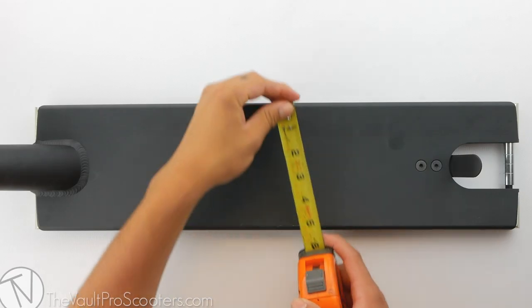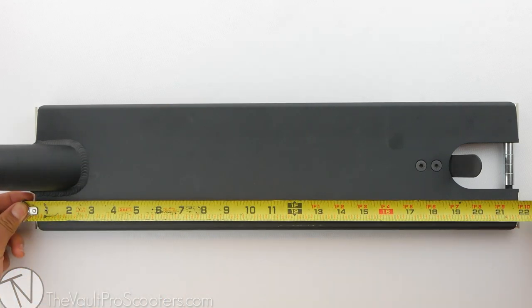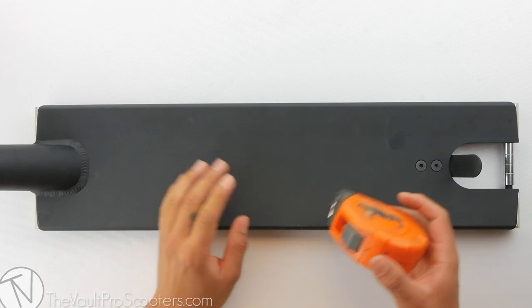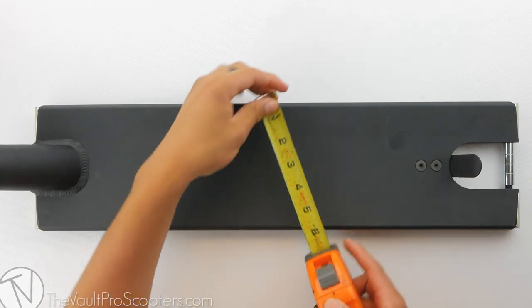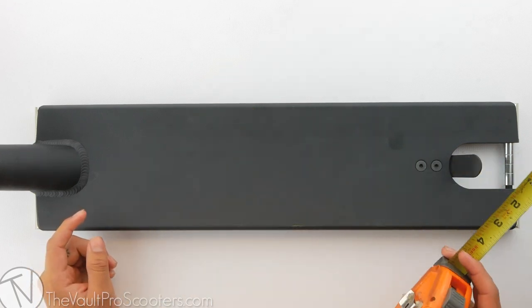Diving right into the sizing, it's 5.5 inches wide by 22 inches long. It's also available in a 23-inch long version. Another cool thing about the Lucid deck is that it's also available in a 6-inch wide by 22 and 23-inch long version.